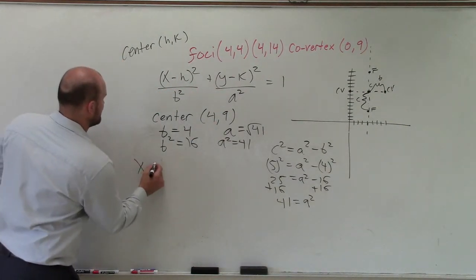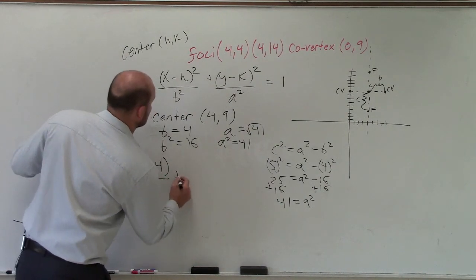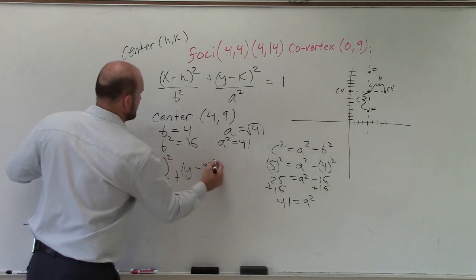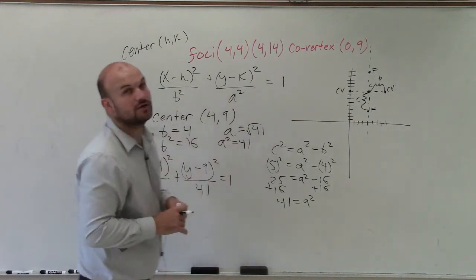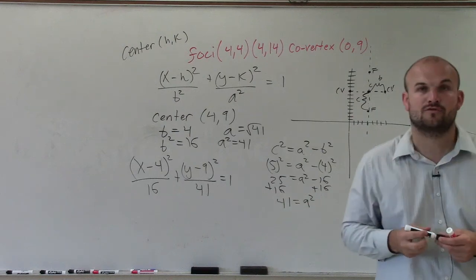Which would be (x minus 4) squared divided by 16 plus (y minus 9) squared, oh, I'm sorry, these are all squared, divided by 41 equals 1. So there you go, ladies and gentlemen. That is how you write the equation of an ellipse, given your foci and a co-vertex. Thanks.